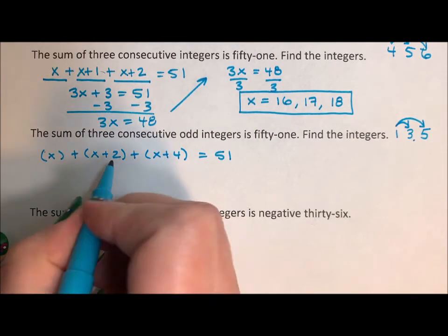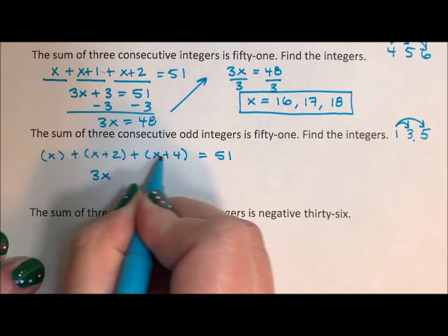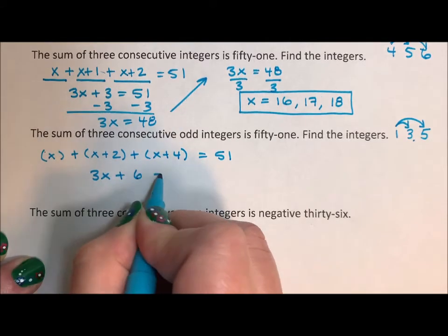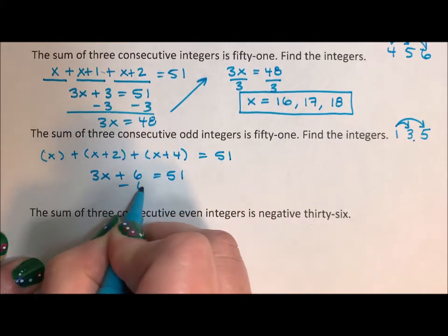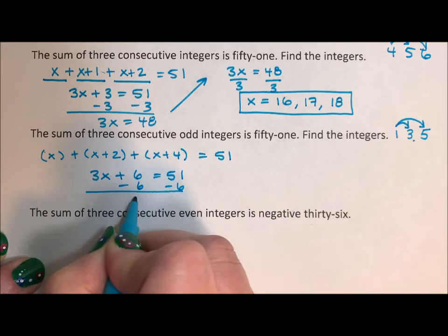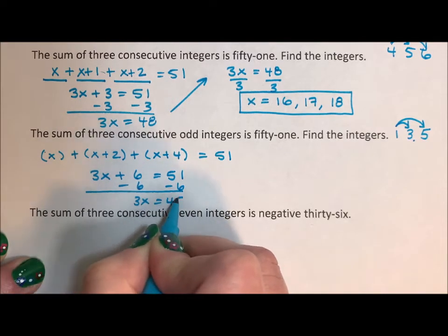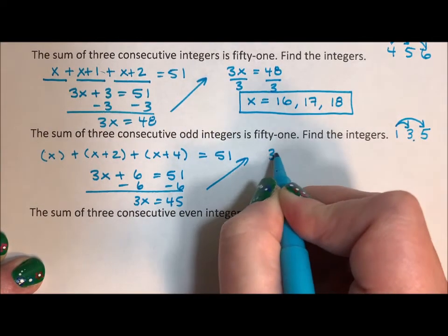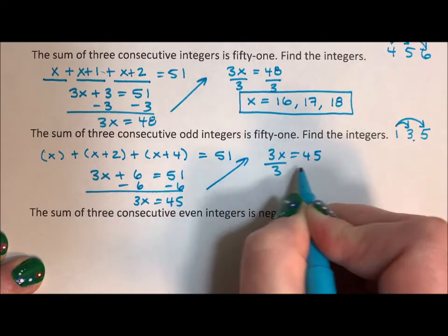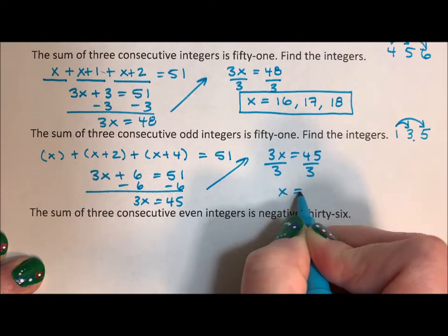Again, there's three x's, three unknowns. Two plus four, so I'm adding six. Subtract the six. Three x is equal to 45. So divide by three, x is equal to 15.